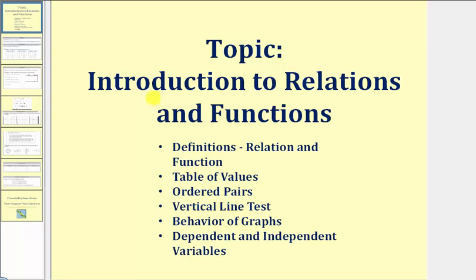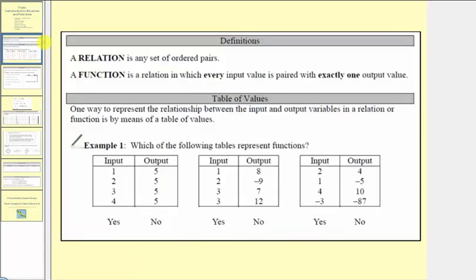Welcome to the introduction to relations and functions. Let's begin with two definitions. A relation is any set of ordered pairs. A function is a relation in which every input value is paired with exactly one output value.